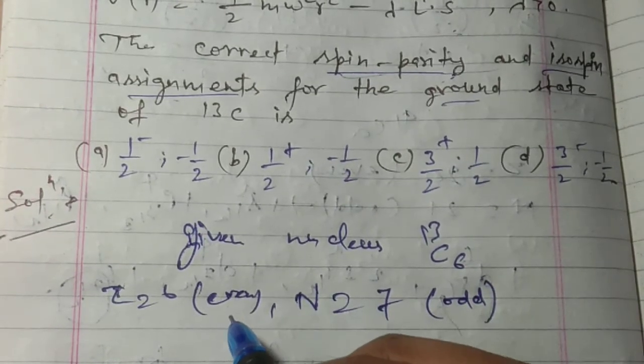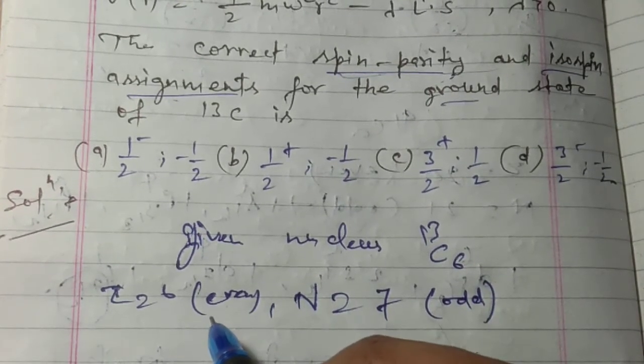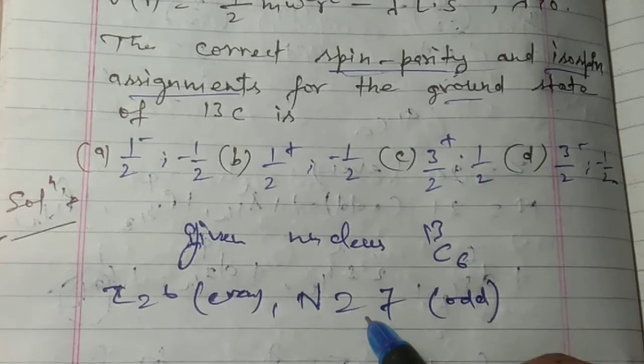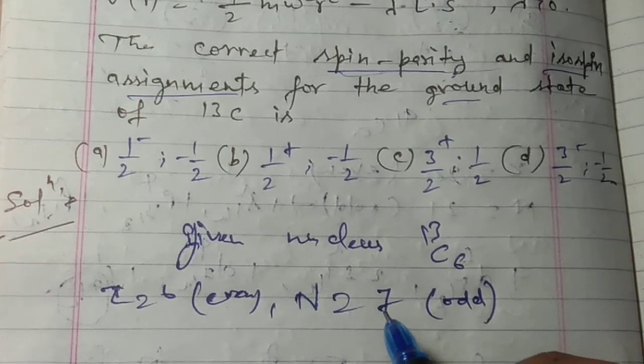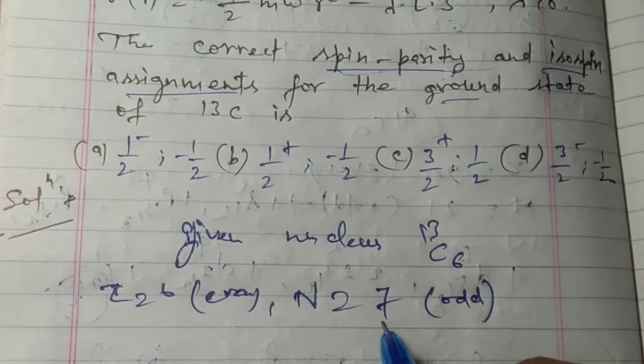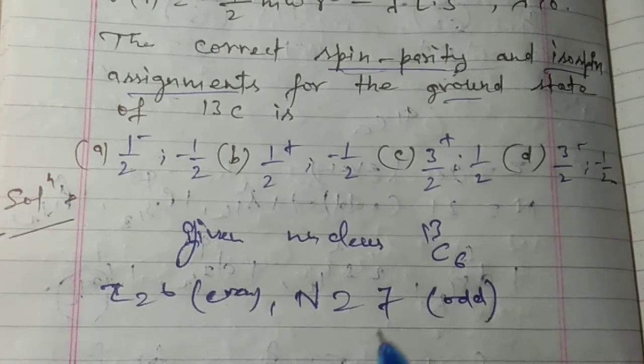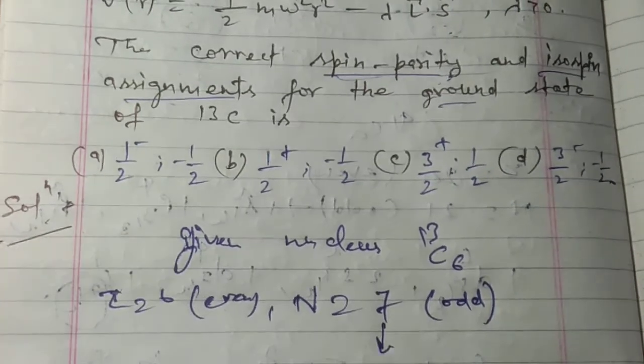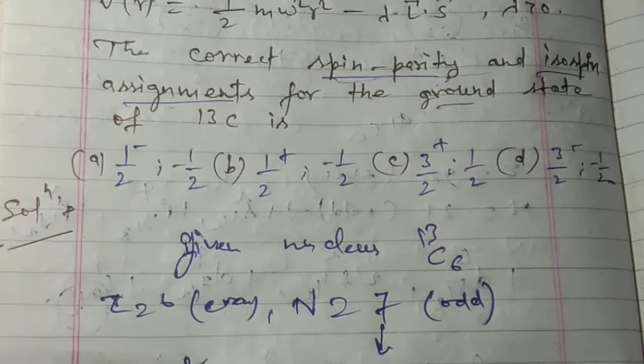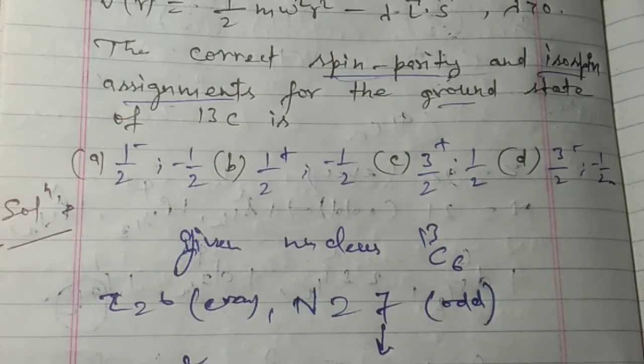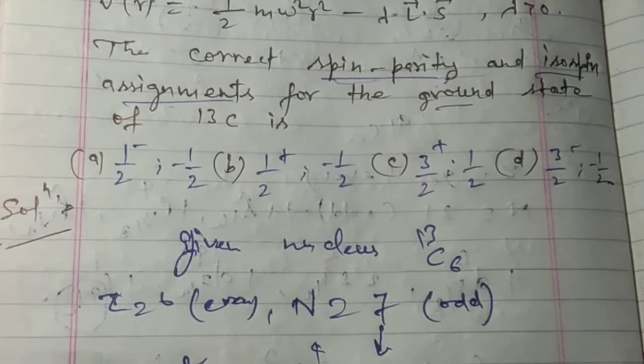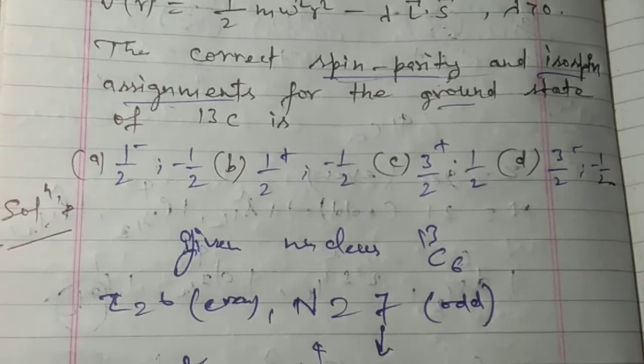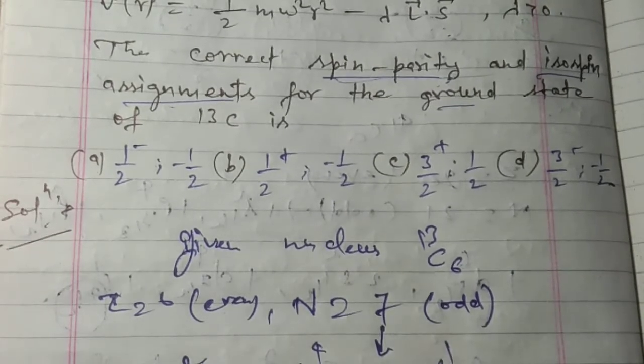We know that the even number does not contribute any angular momentum part. So here the contributing part is neutron, and this gives 1p₃/₂ and 1p₁/₂.